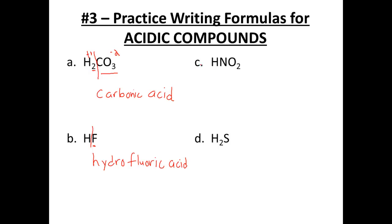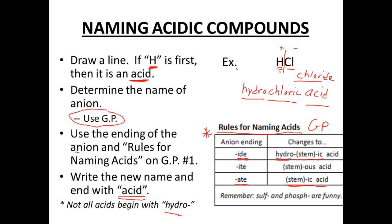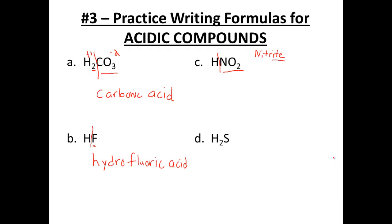Next: HNO₂. We know right away it's going to be an acid. We need to find NO₂ on our gold packet — NO₂ is nitrite, which ends in -ITE. From our rules, the stem of nitrite is 'nitr', and it ends in -OUS plus acid. So we call it nitrous acid.